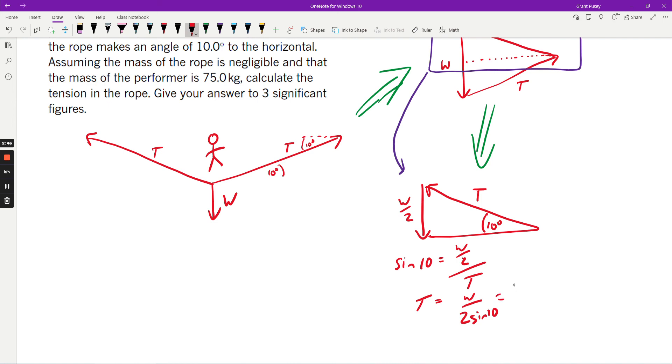And in this case, that is 75 times 9.8 over 2 sine 10, which is equal to 2,120 newtons to three significant figures, and there you go.